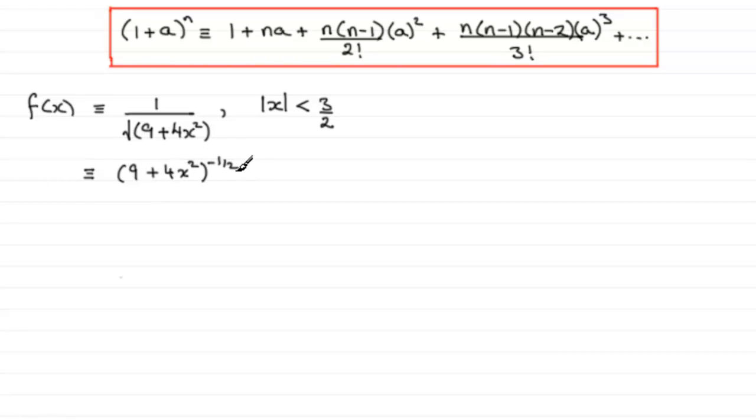Now we've got a 9 at the front here; we're only allowed to have a 1 here, so again we need to modify this. To do that, what we do is we pull out a 9 in front of the bracket, so 9 times 1 would give us that 9, and 9 times 4x²/9 would just give us 4x², and all of this is to the power -1/2.